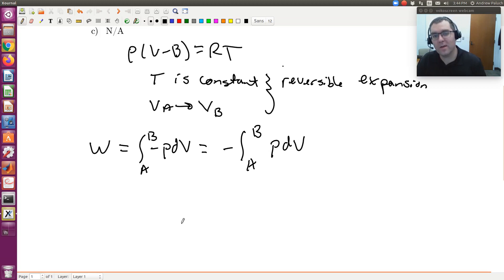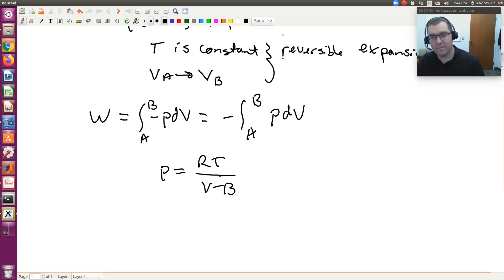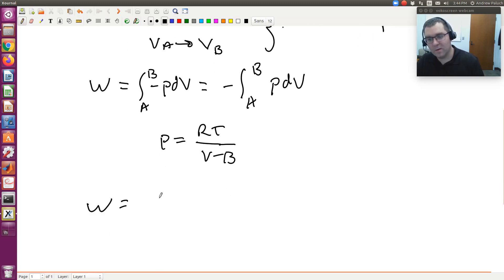That's where our equation of state comes in. From the truncated virial equation, if I solve for P, P equals RT divided by V minus B, where B and T are both constants. I'm going to take this expression for P and plug it in.